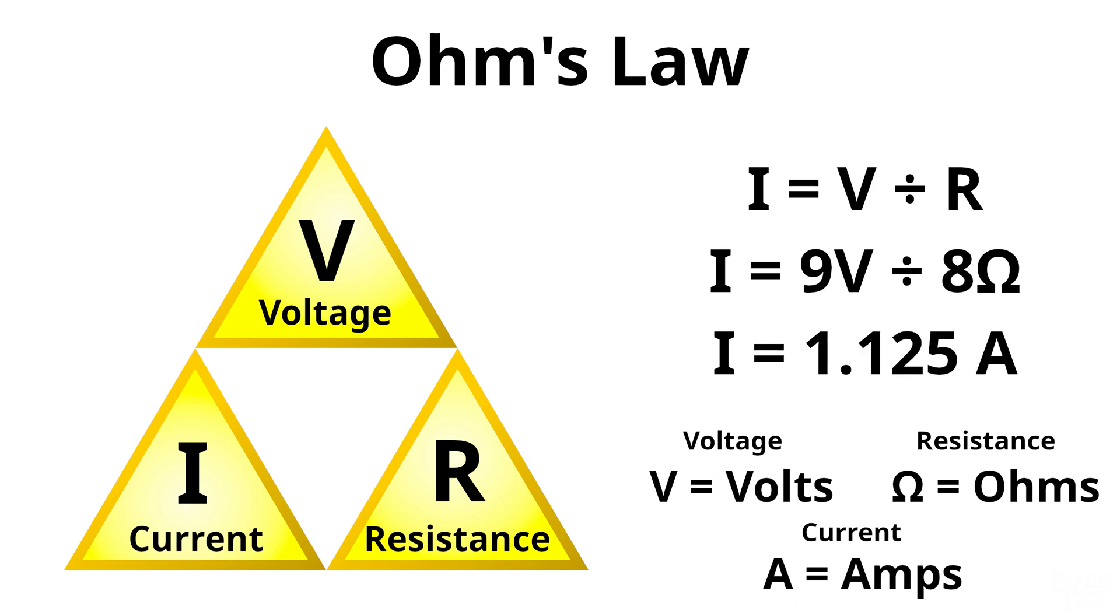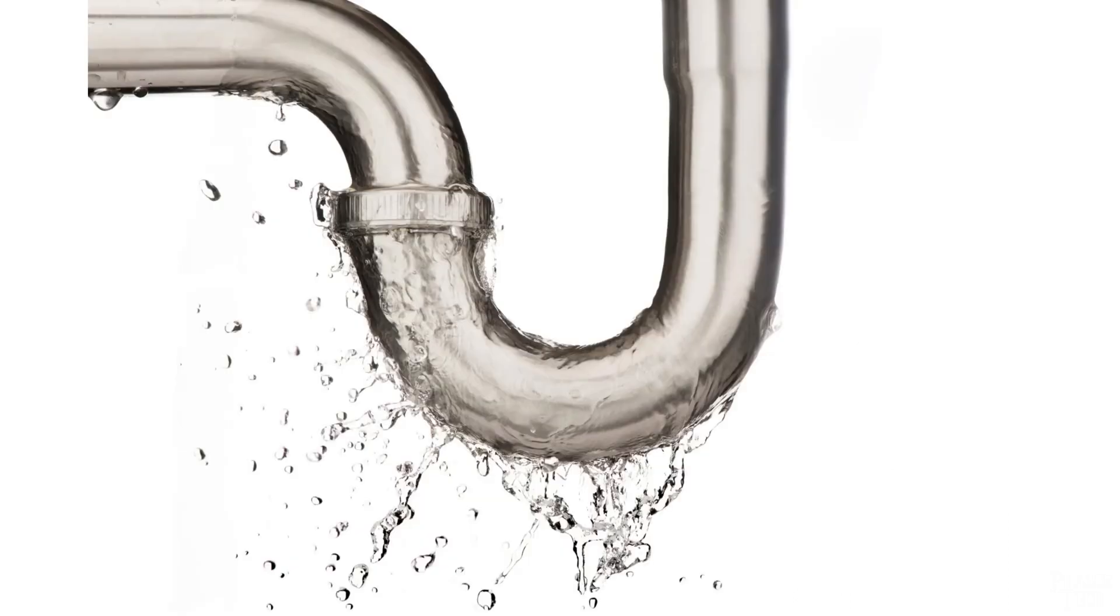we'll see that the current changes accordingly and would be 1.125 amps in that case. But you're probably wondering, what exactly is voltage, current, and resistance? Well, let's now use the classic water analogy to illustrate it.